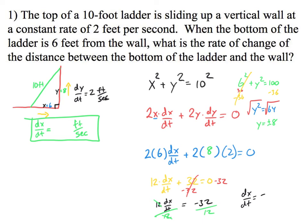I'm going to divide by 12, and I get dx/dt is equal to -32 over 12. Well, 4 goes into both of those. So if 4 goes into both of those, won't that be 8 thirds? So won't that be -8/3 feet per second?